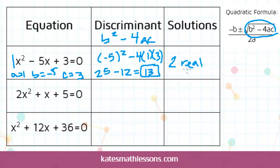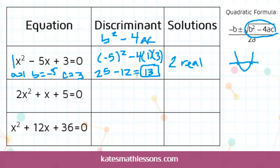They may be decimals, but that's okay — they're real numbers. Anytime you have a positive discriminant, you're going to have two real solutions. If you think about the graph, having two solutions means you're going to have two x-intercepts. So your graph is going to cross the x-axis in two separate places. When you're finding the discriminant, it doesn't tell you where the graph will cross, but if it's positive, it will cross twice.